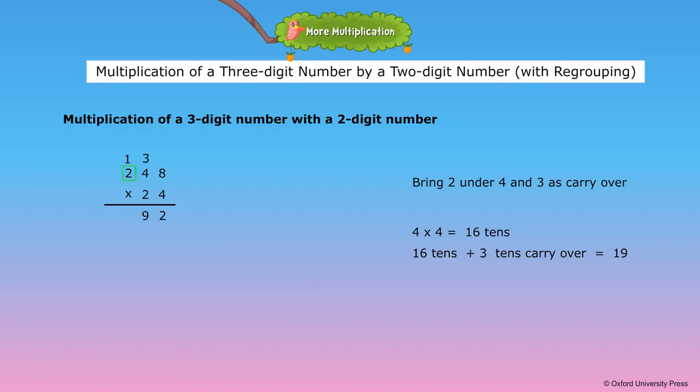Now multiply two hundreds by four to get eight hundreds. Eight hundreds plus one hundred carried over is equal to nine hundreds.